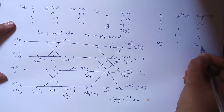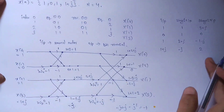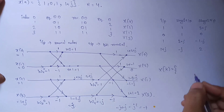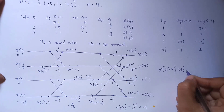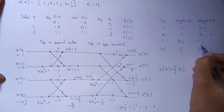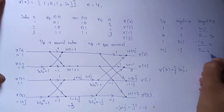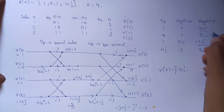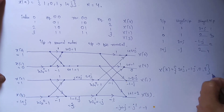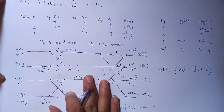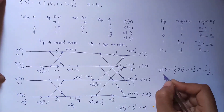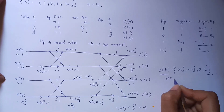The output of stage 2 is the frequency domain sequence. Written in order: the zeroth index is 3+j, the first index is −1−j, the second index is 0, and the fourth index is 2. So the frequency domain sequence is [3+j, −1−j, 0, 2], obtained after performing the discrete Fourier transform using decimation in frequency fast Fourier transform.